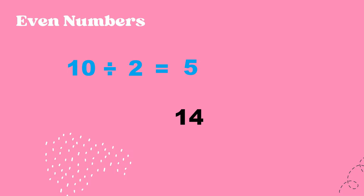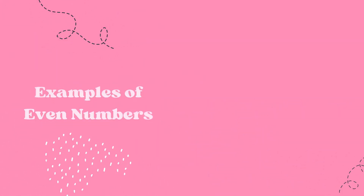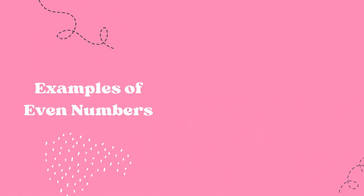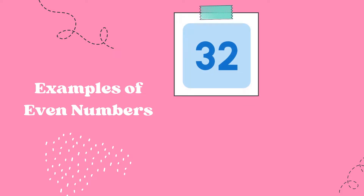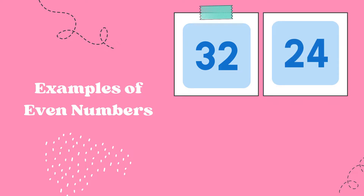Another example: fourteen. Fourteen is ending in what digit? It ends with four, so fourteen is an even number. If we divide it by two, the remainder is zero. Fourteen divided by two is equal to seven. Here are some examples of even numbers: 32 ends with two, so this is an even number. Another one is 24, ending with four.